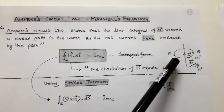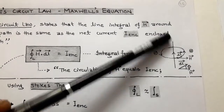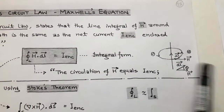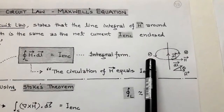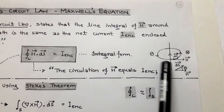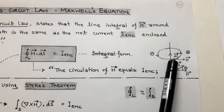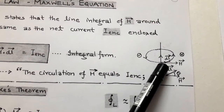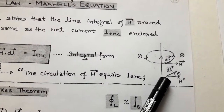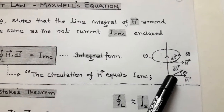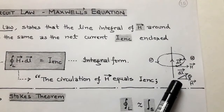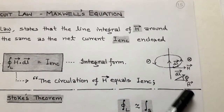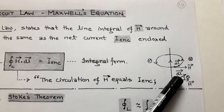For Ampere's circuit law, we consider a conductor carrying a DC current or steady current. Surrounding this conductor there is a magnetic field, and the direction of the magnetic field is determined by the right-hand rule. On this closed path, we take a differential length, small length dL vector. The direction of the magnetic field intensity H makes a tangent to this closed path, that is in the direction of phi, because here we consider a cylindrical coordinate system. The direction of H is along the unit vector phi, making some angle theta with respect to dL vector.